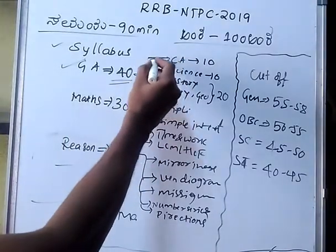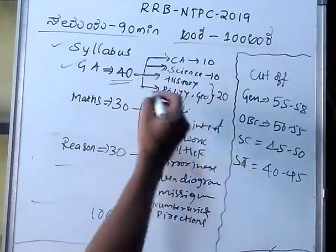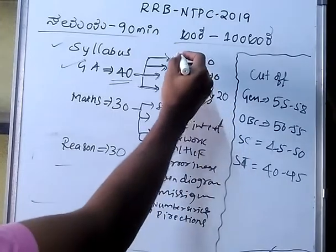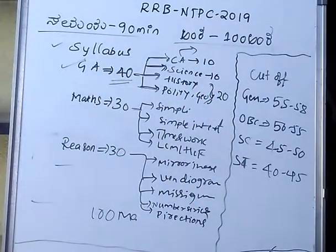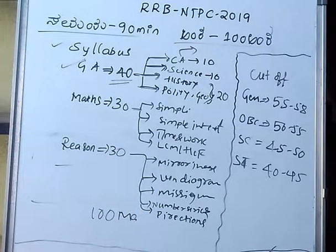Let's go down to the current events section. We need to cover Prime Minister, ministers, and related topics. In current events, there are almost 5 to 6 questions.